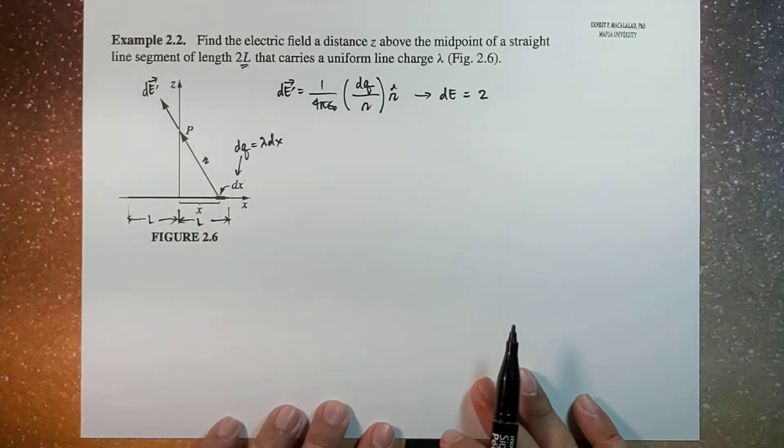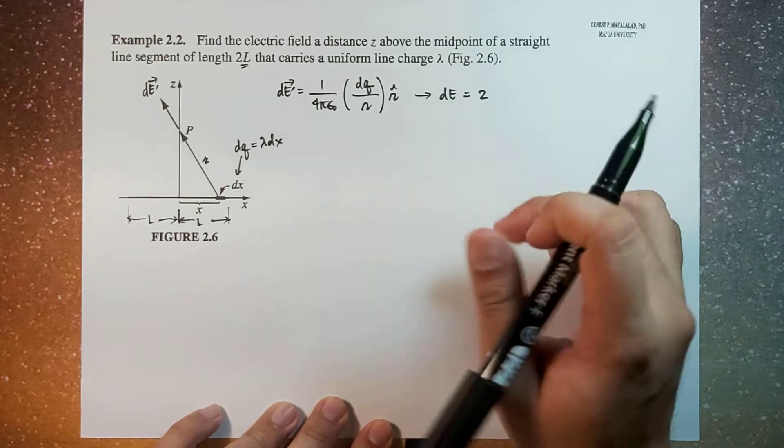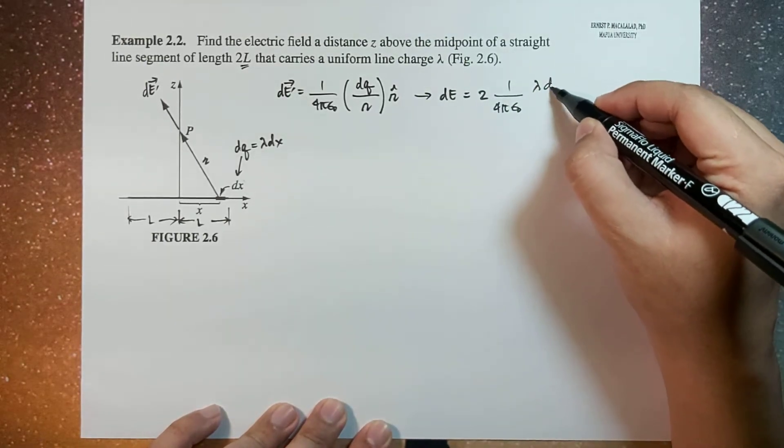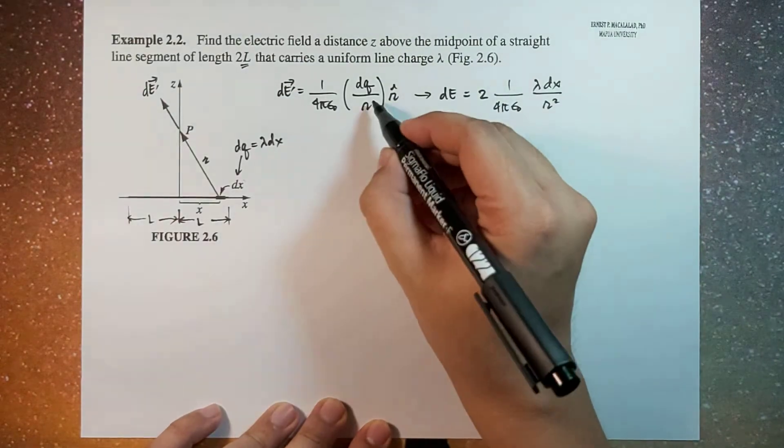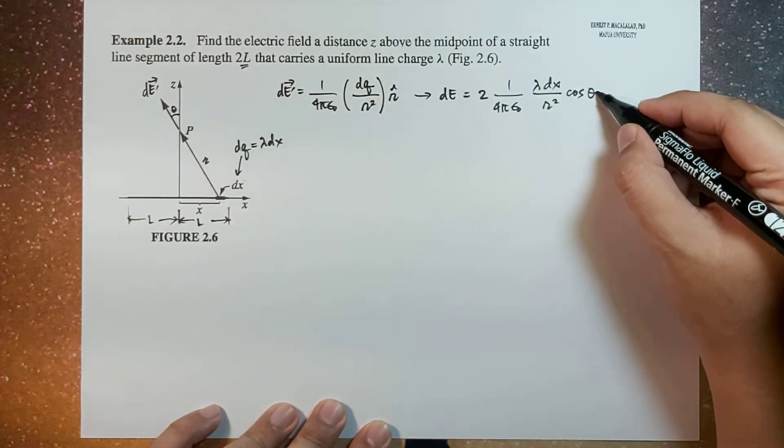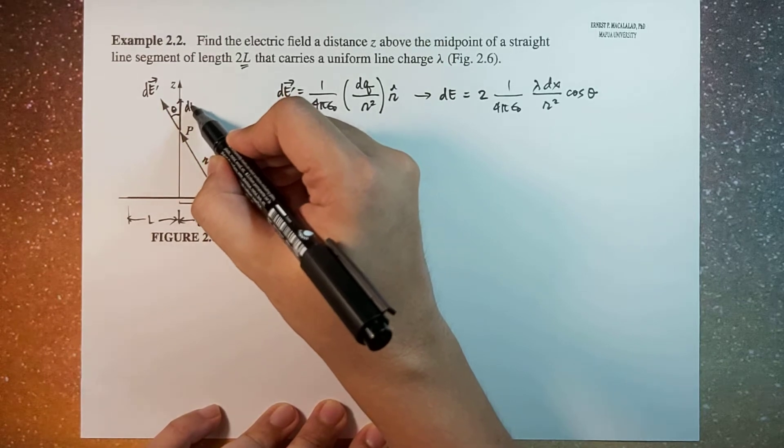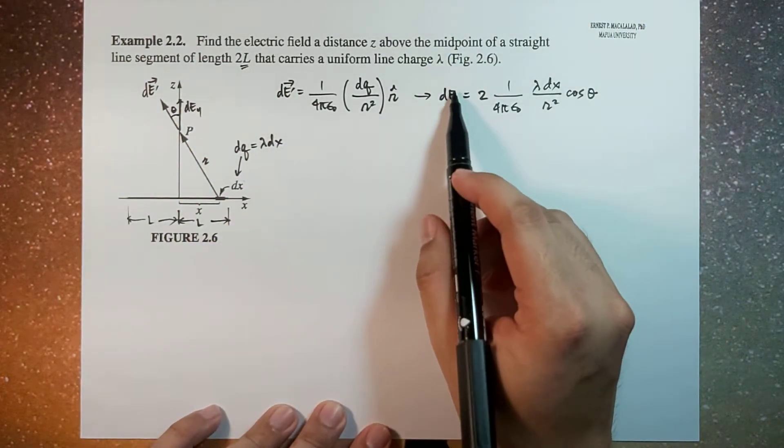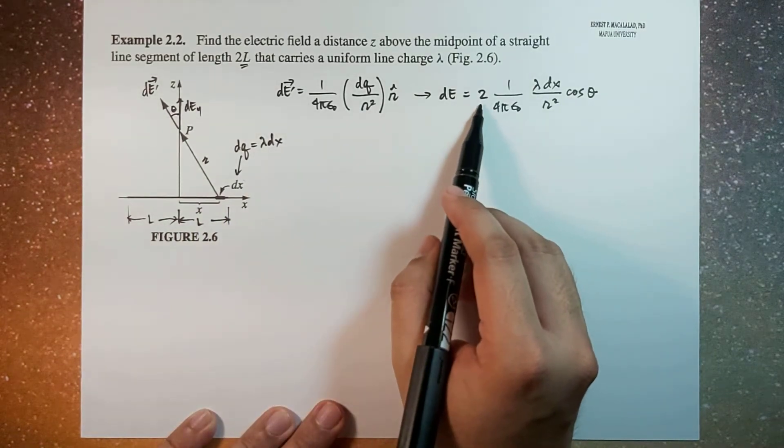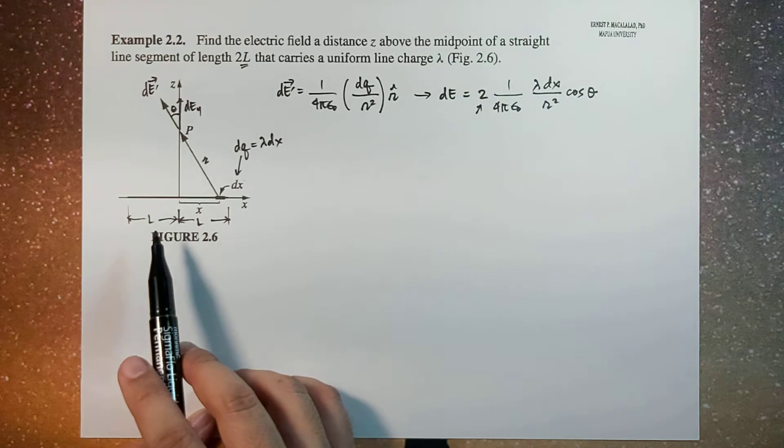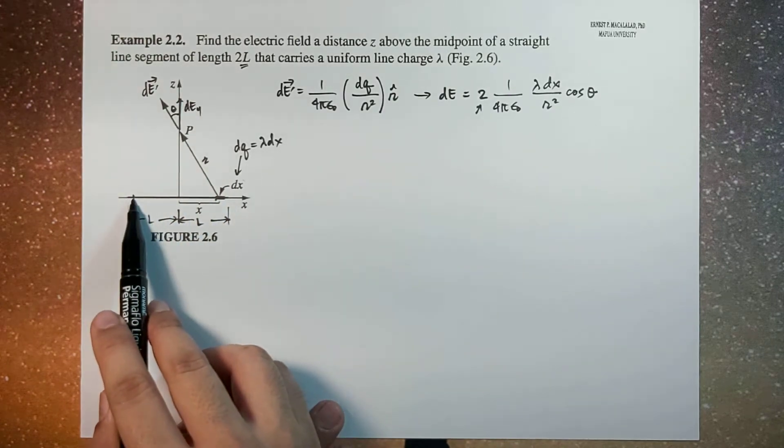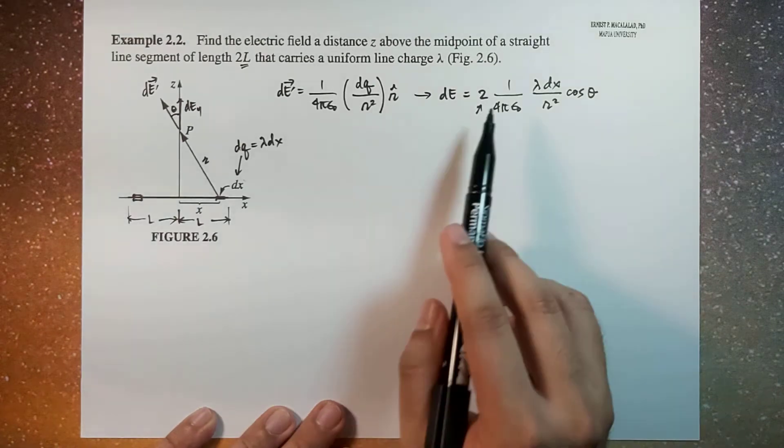This is 2 times 1 over 4 pi epsilon naught lambda dx over script r squared times cosine theta, because we're only looking at the vertical component. This dE will be the sum of the counterpart, the combined effect of this infinitesimal charge dq and its pair on the other side. That's why there is 2 here.